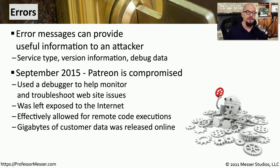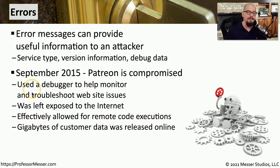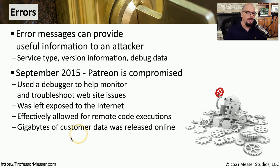An example of an error message turning into a vulnerability and ultimately an exploit was in December 2015 on the website Patreon. They had installed a debugger to help monitor a problem with their website. Normally this would not be visible to the public — it's only for internal use. But unfortunately they left it turned on and it was exposed to the internet. Attackers found a way to access this well-known debugger and were able to execute code on the web server itself, ultimately transferring gigabytes of customer data and releasing it all online.